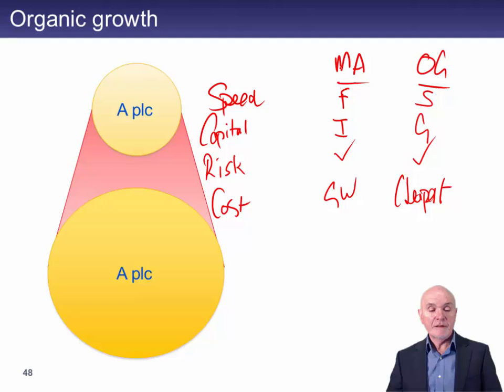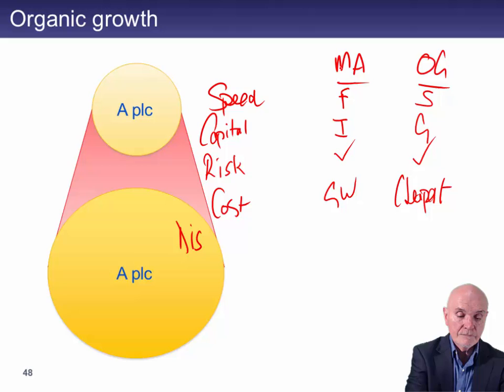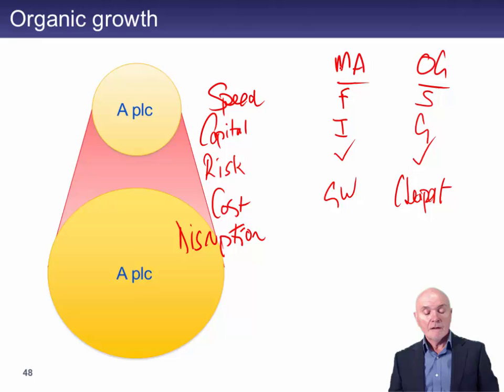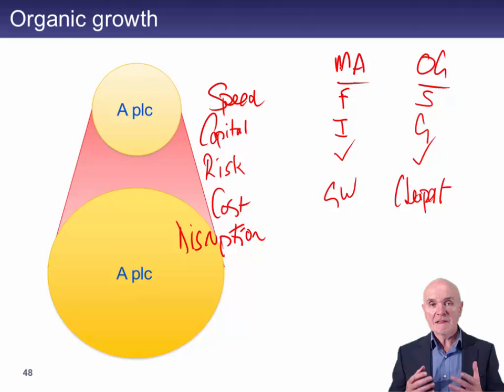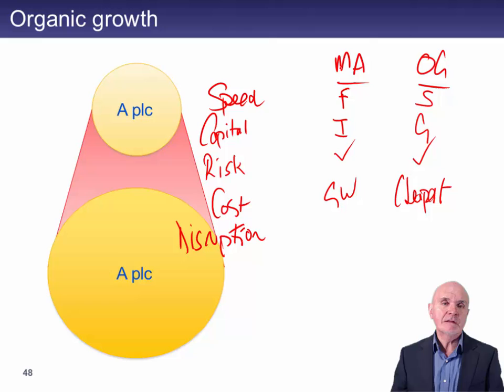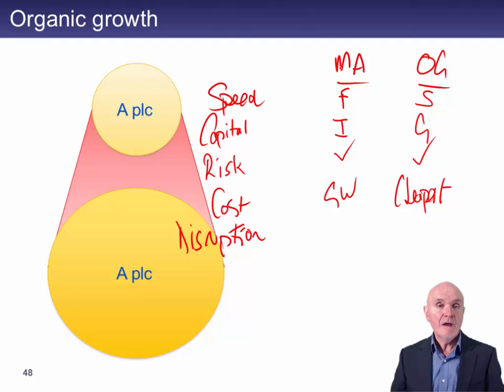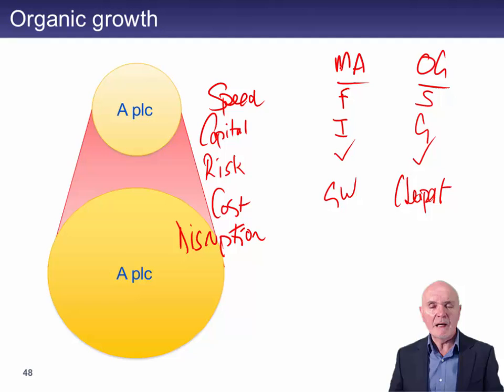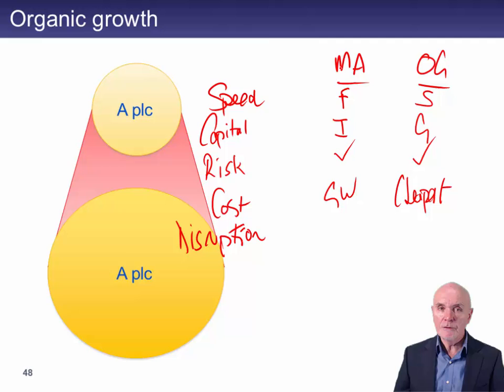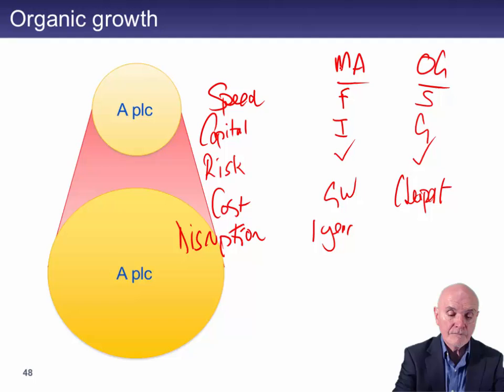The final element is disruption. Mergers and acquisitions tend to be highly disruptive. Employees feel very nervous because they know that generally after a merger and acquisition there are very often redundancies. Even if there aren't redundancies, they're going to be subject to a different boss, different working styles, and maybe their job will change. Many people, if they can, get so unsettled by merger and acquisition that they leave — and very often it's the best people who leave. Generally speaking, disruption in a merger and acquisition is likely to last about one year.